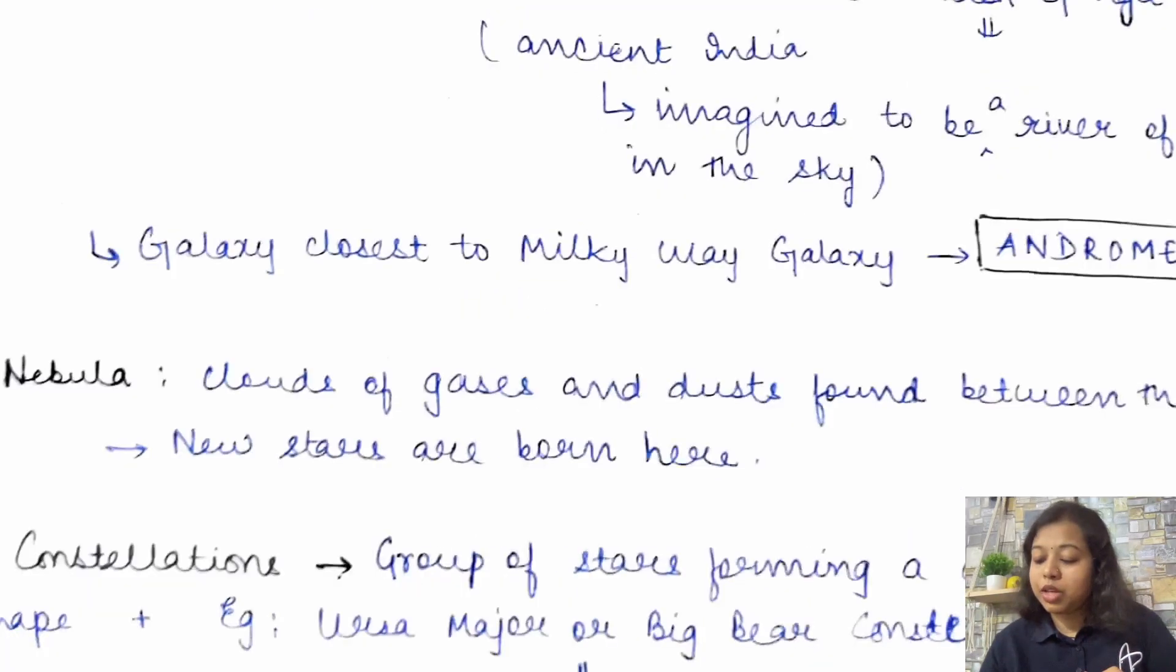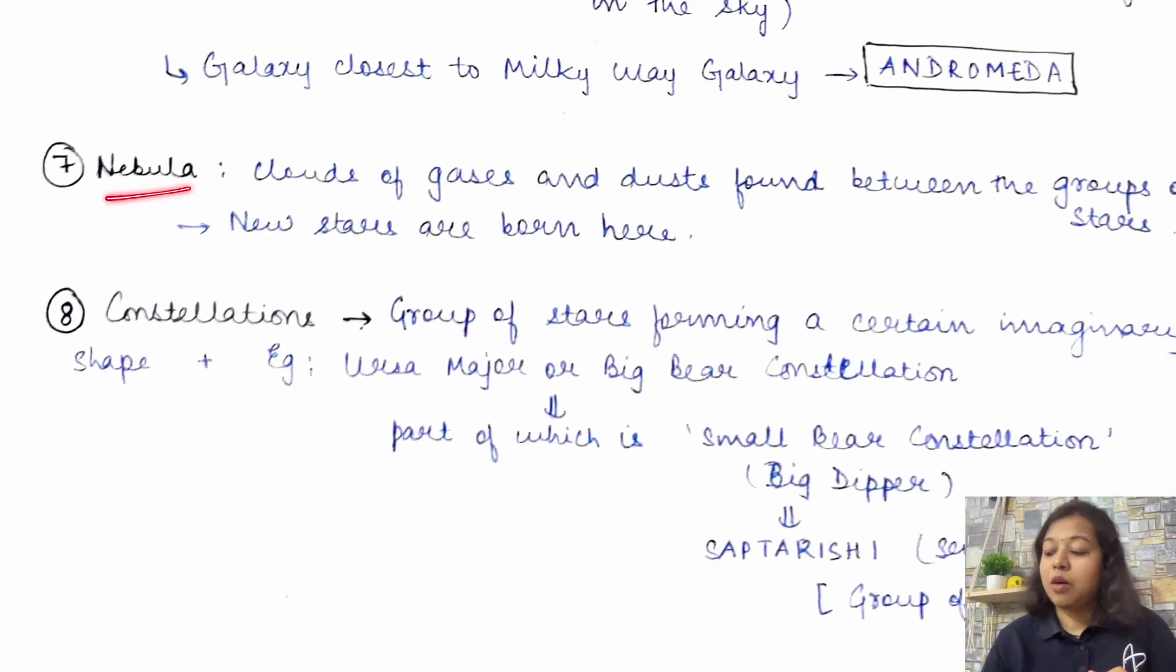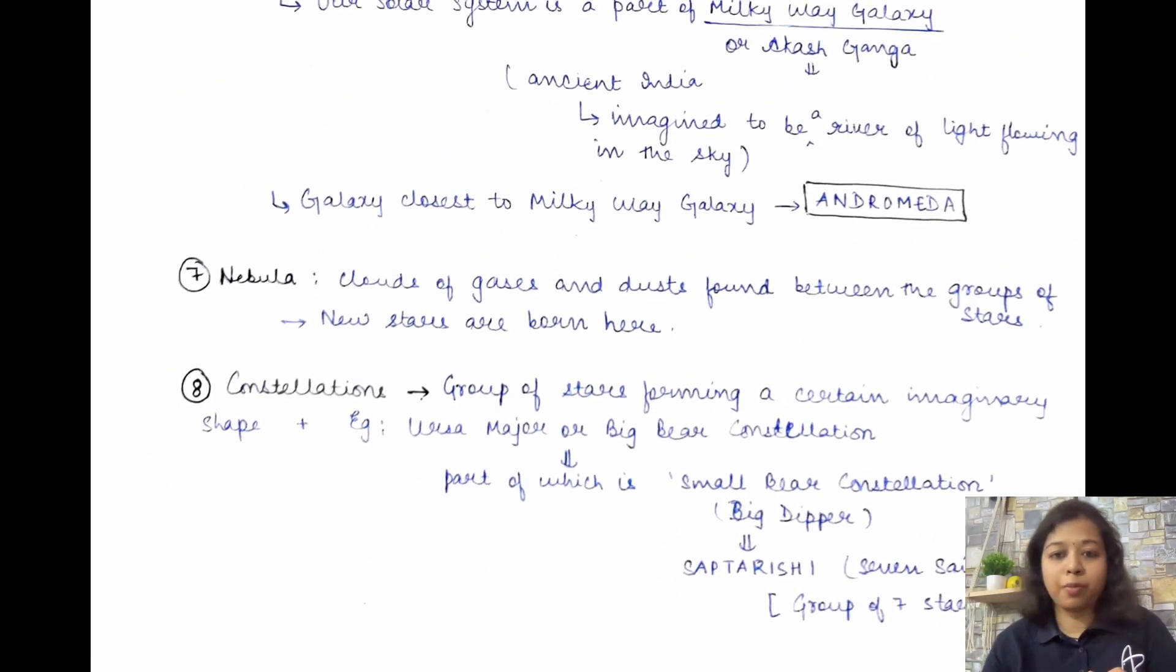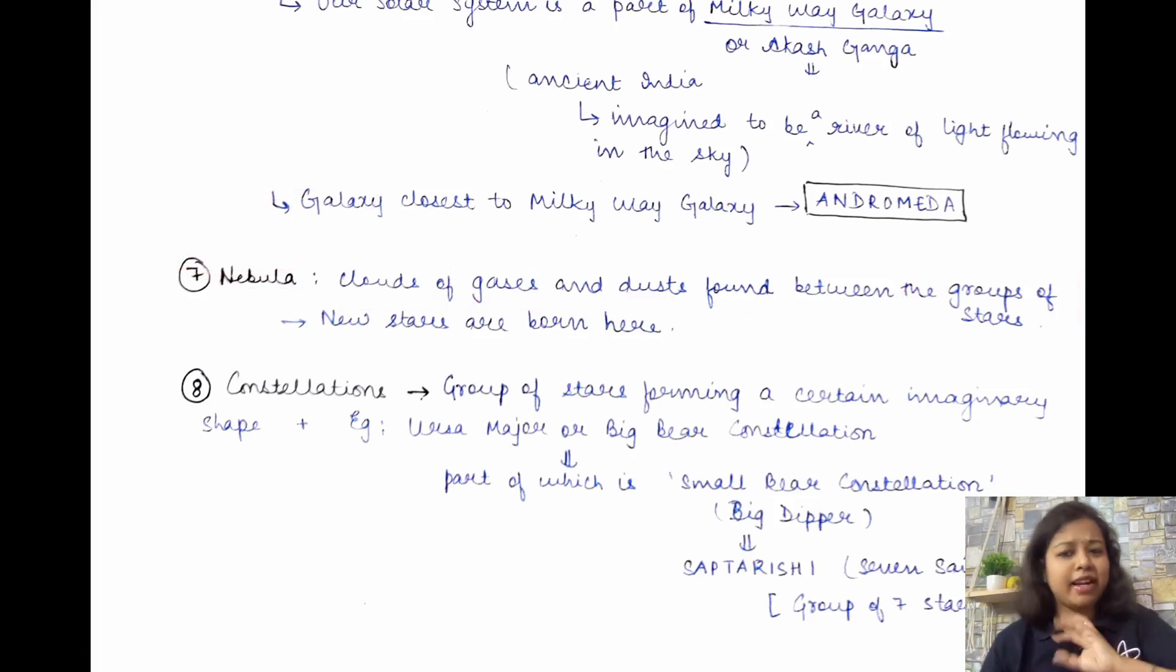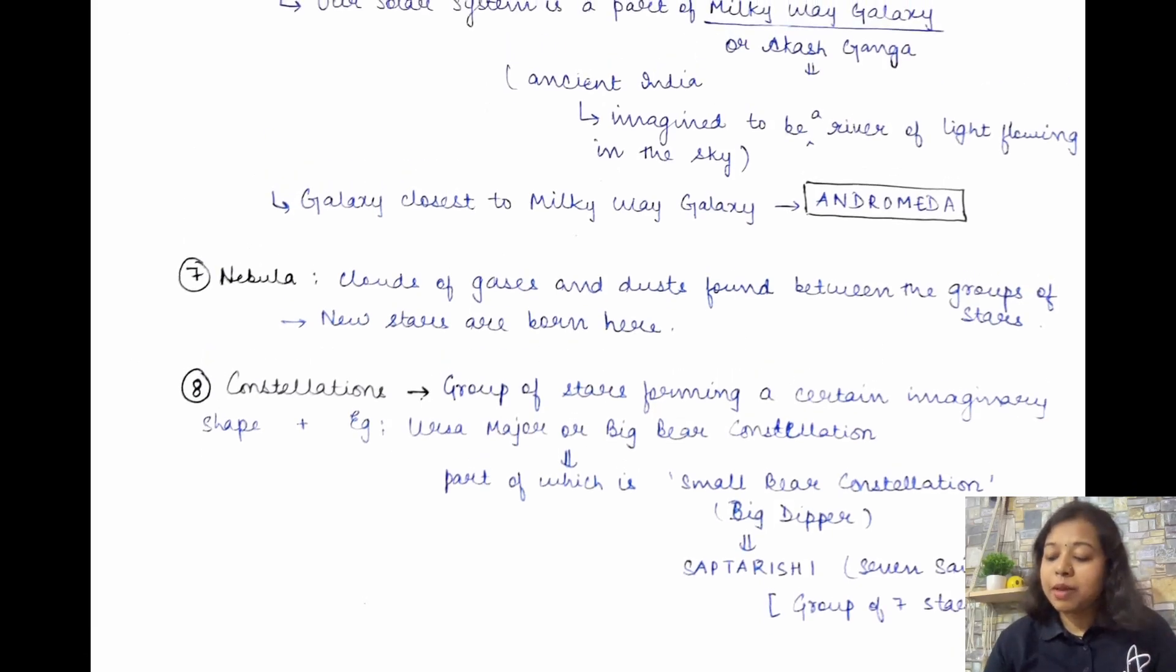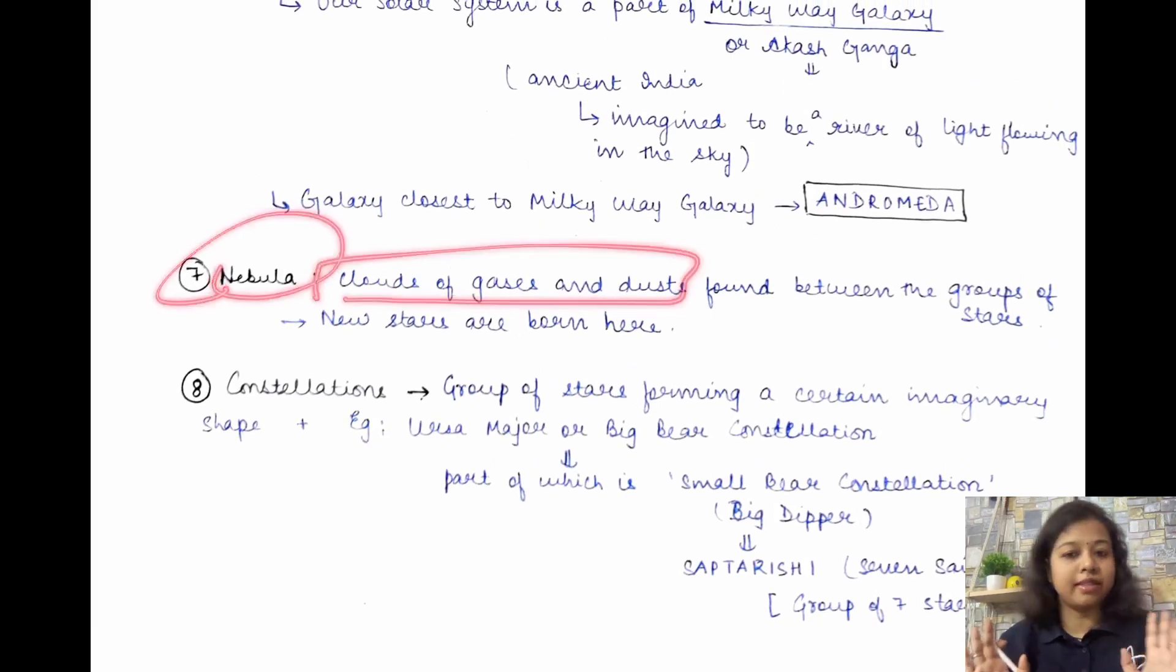Then, introducing you to the another term, which is your nebula. Nebula is basically the clouds of gases and dust found between the group of stars. Okay? So, stars ke beech mein, jo aapka pura space hai. That cloud, that space, which is just full of gases and dust. And phir usme se beech mein, naye stars are born. Wo kaise hota hai, evolution, formation of the stars. How does it happen? That, all of that we will do once we are done with the terminology. So, you don't have to worry about it. So, just remember about the cloud of gases and dust. Thik hai? This is nebula that you have to remember.